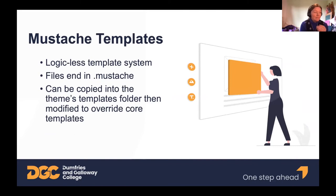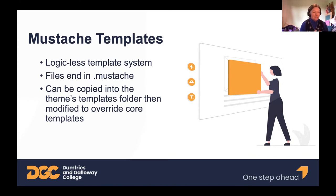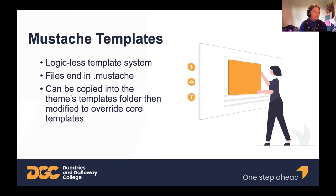There's a templates folder where you put your Mustache files. Mustache is a logic-less template system that Moodle uses — it allows us to create HTML templates with placeholder strings that Moodle replaces with rendered information. For example, a template for a course page header would have a placeholder for the course title, filled with the actual title when you navigate to that course. You can find Mustache templates throughout Moodle's core folders; they all end in .mustache. To override them, you create a copy in the theme template folder and modify it — this is much preferable to a renderer override and easier to maintain.